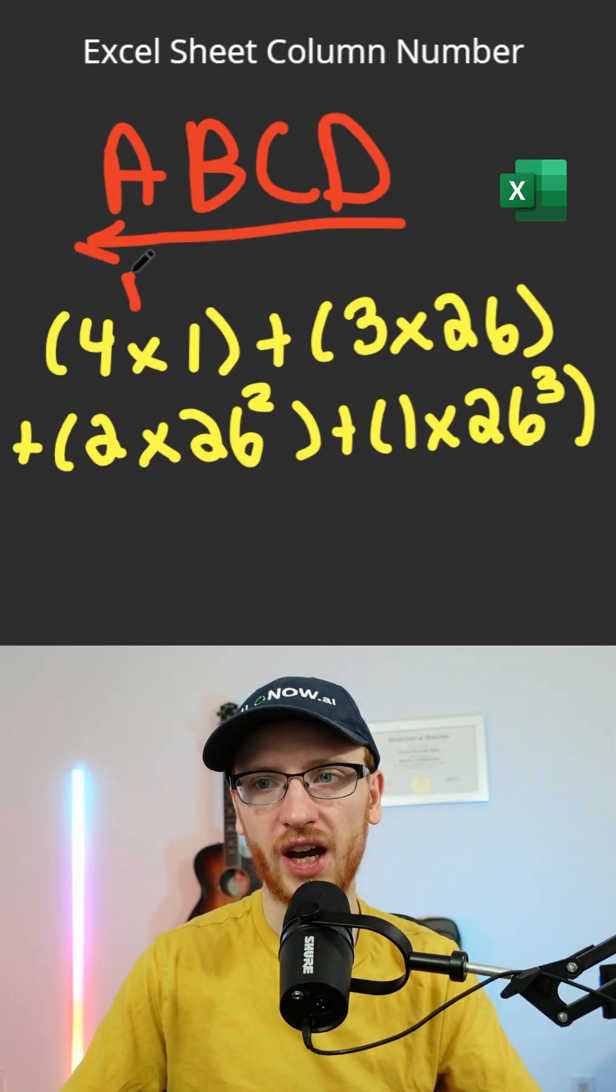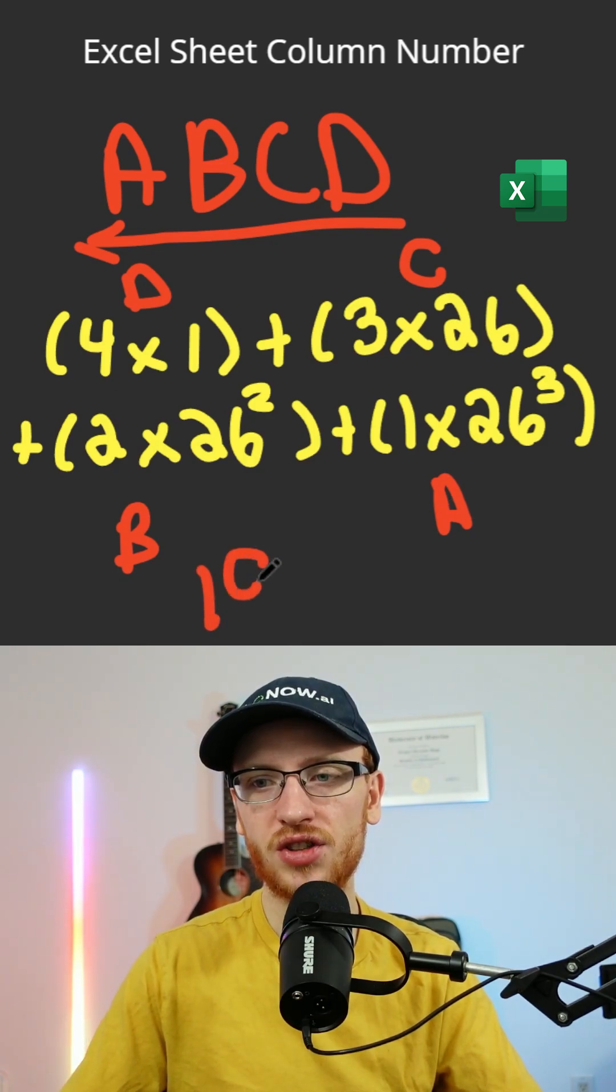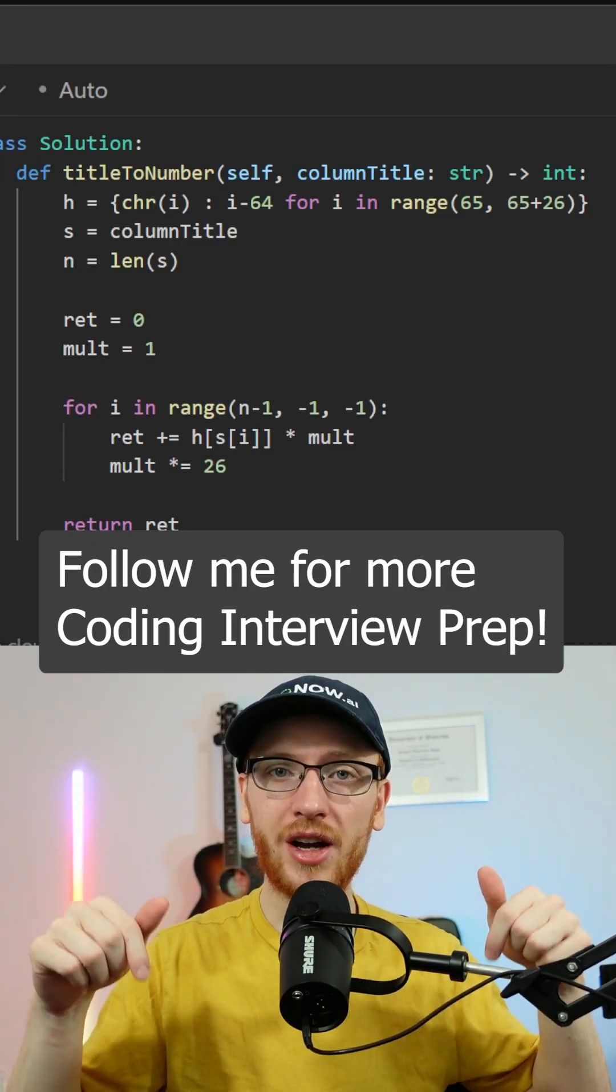So if we kept this pattern going we'd have D plus C plus B plus A, which gives the grand total of 19,010. Here is my Python code.